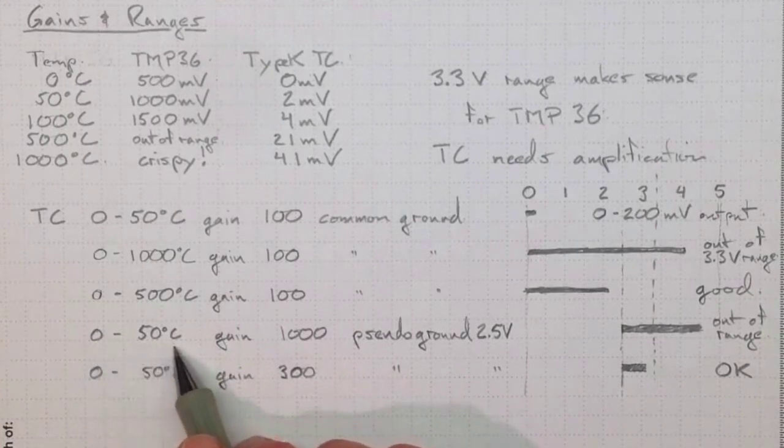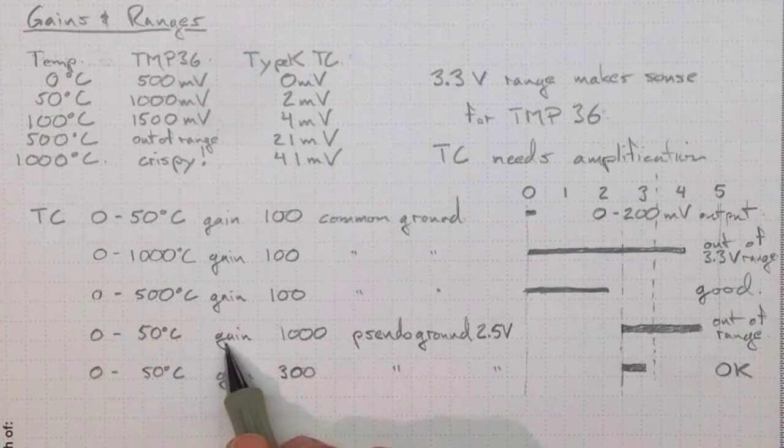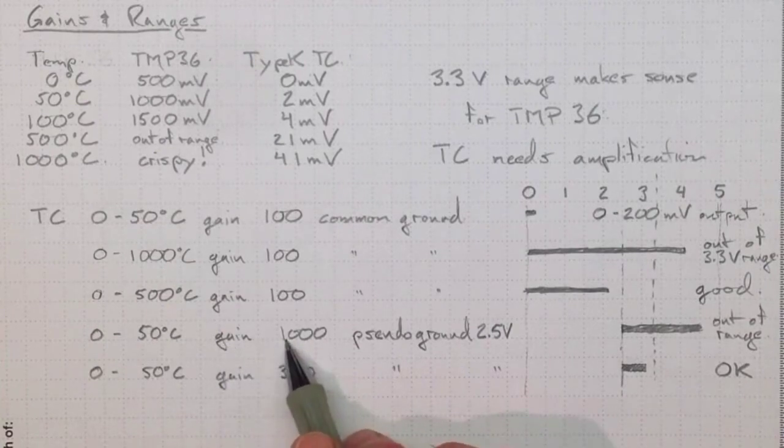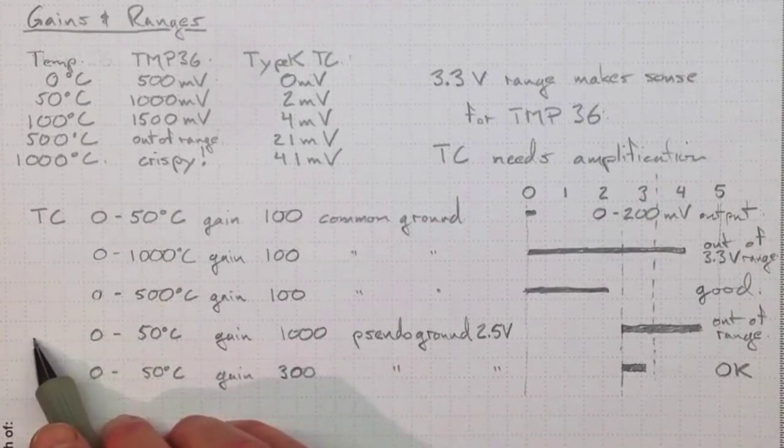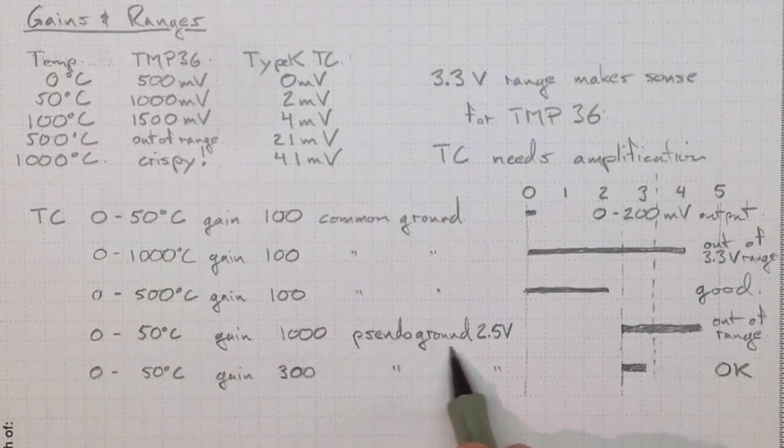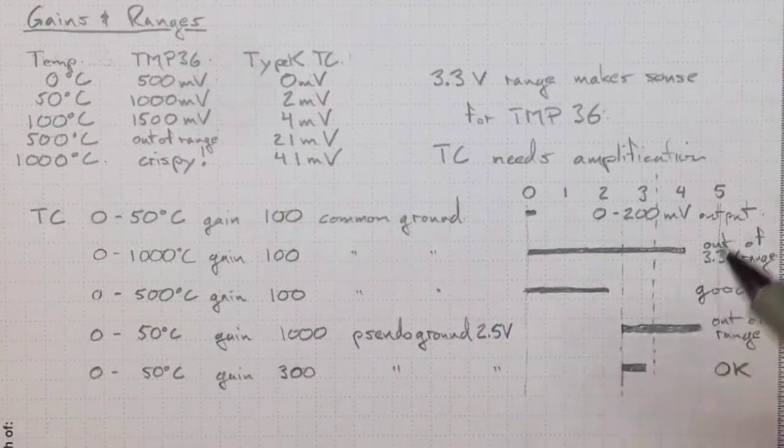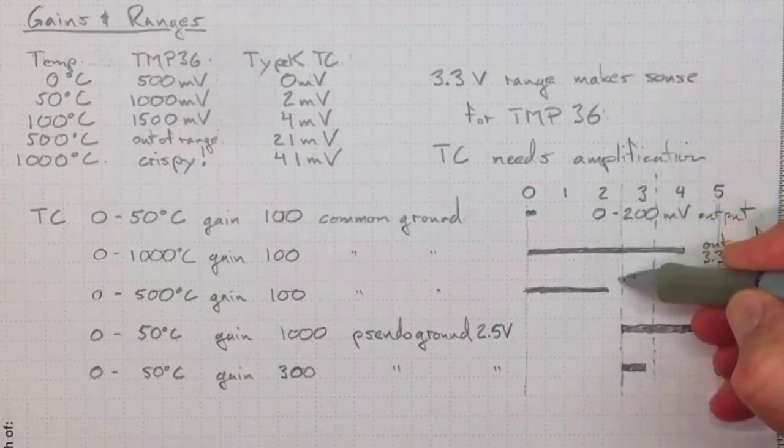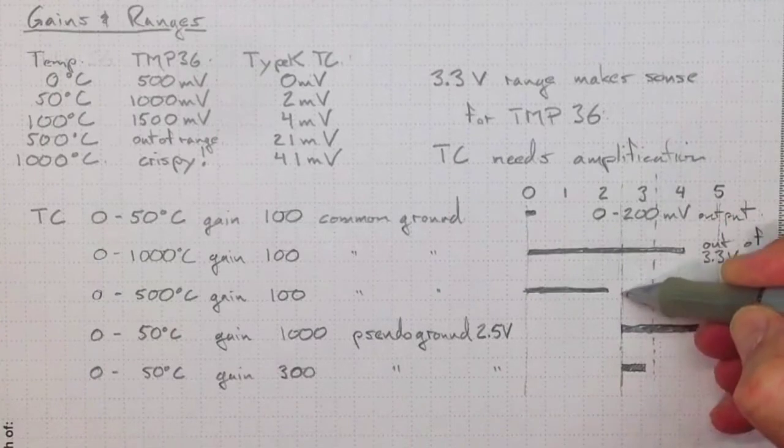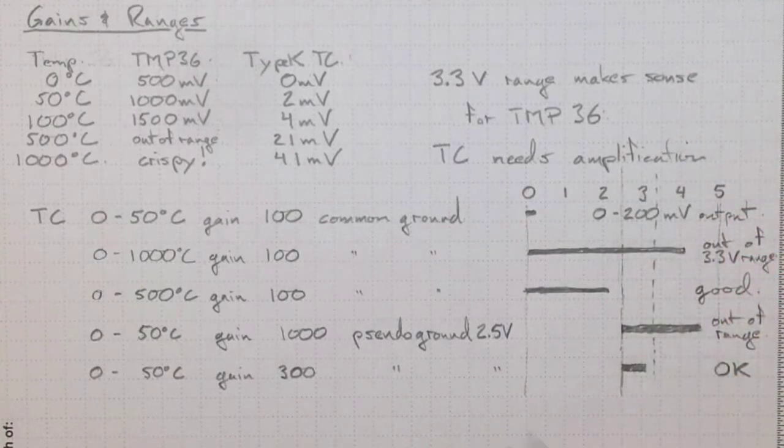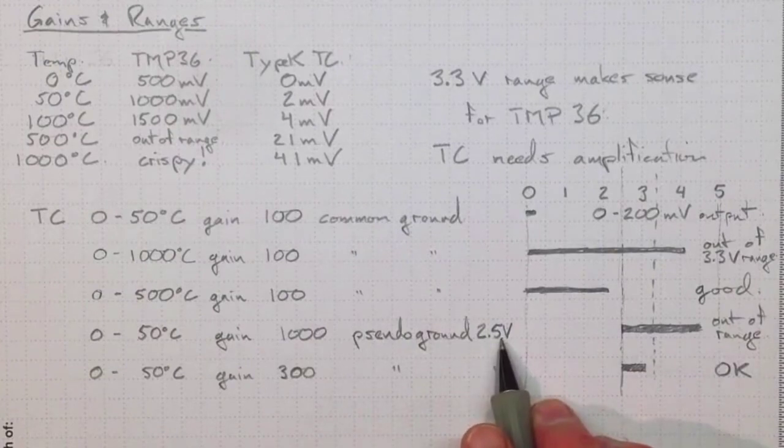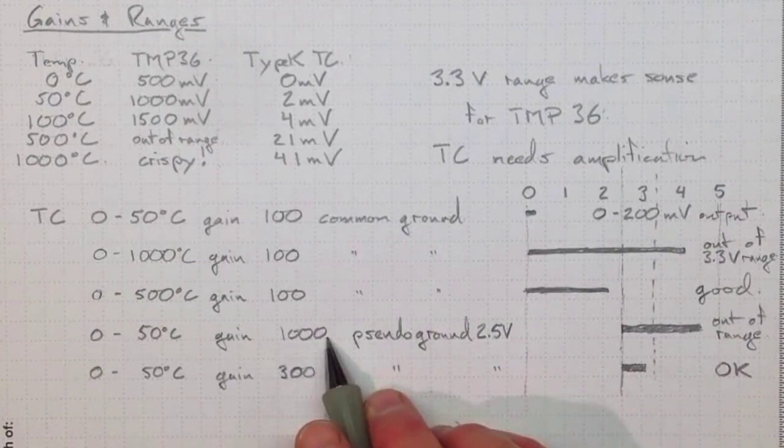If we're only interested in low temperatures, down near room temperatures, zero to fifty degrees Celsius, we might want a higher gain. Try a gain of a thousand. And if we're interested in the possibility that it might actually go negative, then we might use a pseudo ground amplifier to make our base value around 2.5 volts, somewhere in the middle of the range of voltages that we're working with.